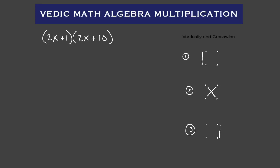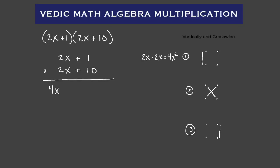Next problem: two X plus one times two X plus 10. First, we want to set this up vertically — two X plus one times two X plus 10. Step number one is vertical: two X times two X. Remember, step number one is down the left side. Two X times two X gives us four X squared. So our first term is four X squared.